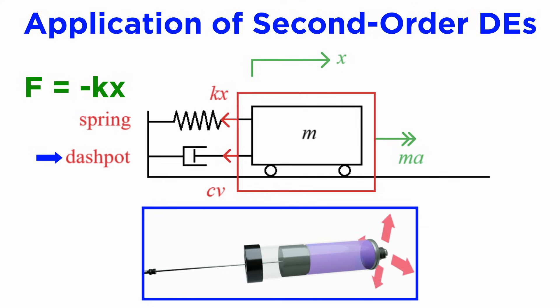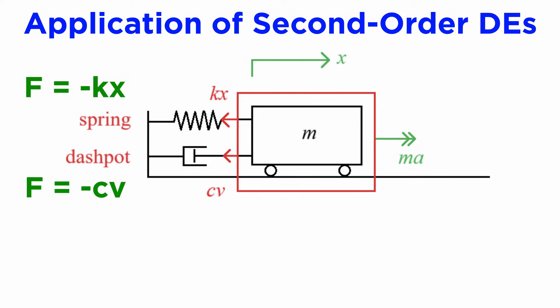A dashpot, also called a damper, is essentially a piston in a viscous fluid, and it produces a force proportional to and opposing the relative velocity v between its ends, so that F equals negative c times v. This means a dashpot will exert a large resistive force on the trolley when the trolley moves quickly, damping its motion. Since speed is the rate of change of displacement x, we can say that the dashpot force in our case is given by negative c times dx dt.